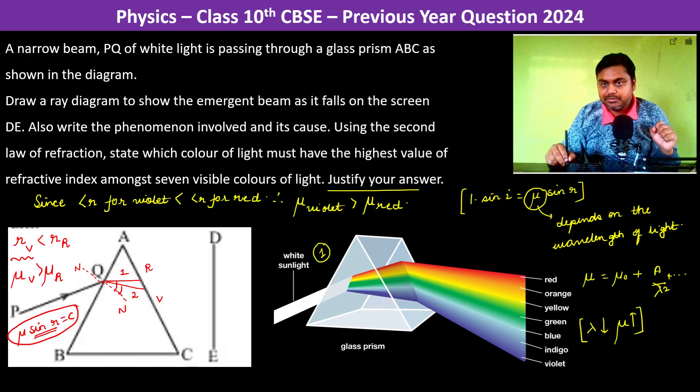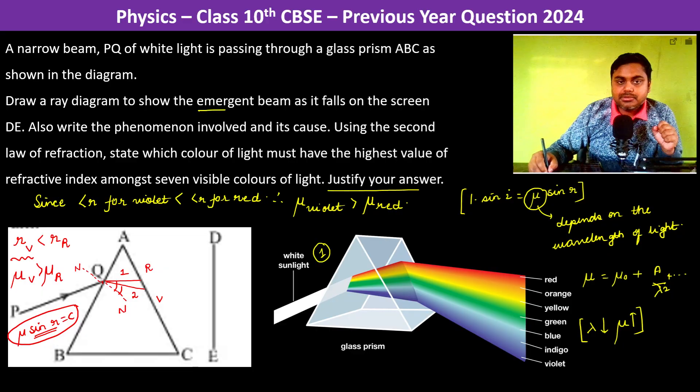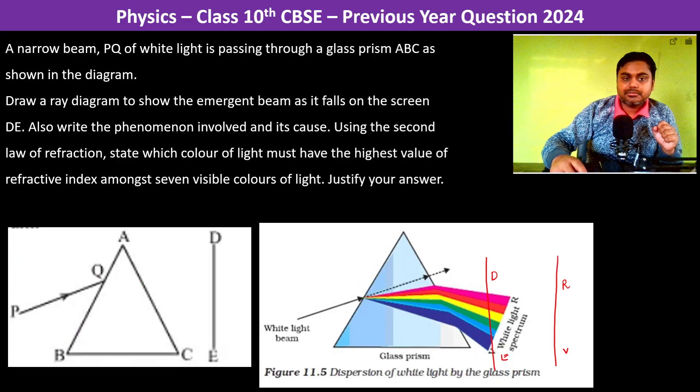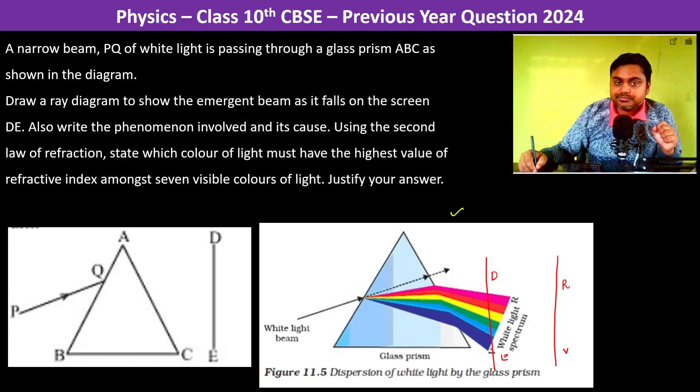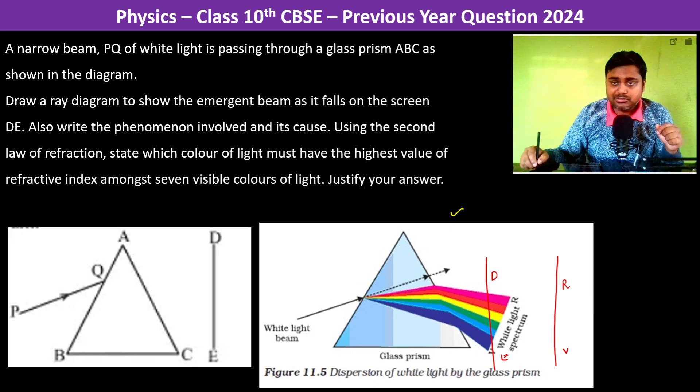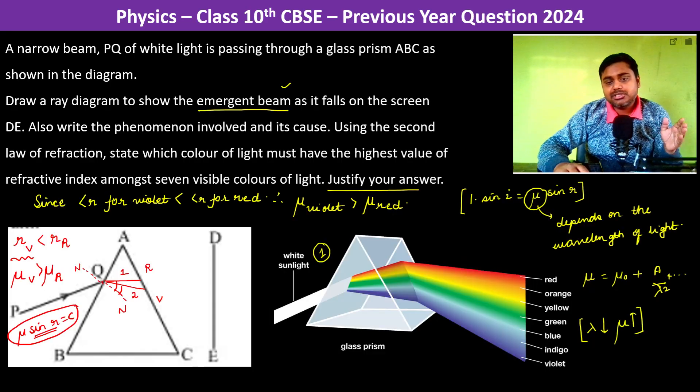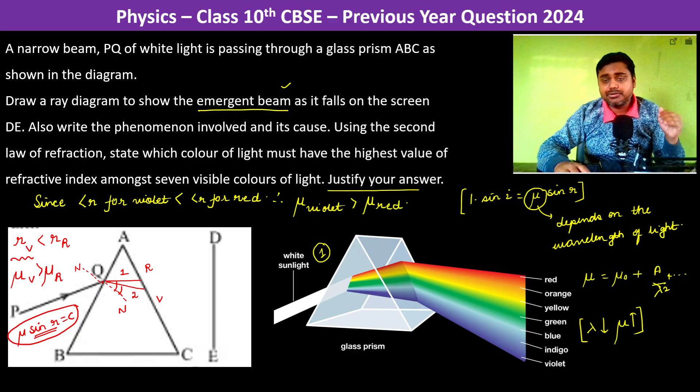So that is how we justify the answer. So in summary, we have to draw the emergent beam so our diagram should look like this. And then the phenomenon is dispersion which is caused due to refraction. Refraction is occurring at two sides of the prism.